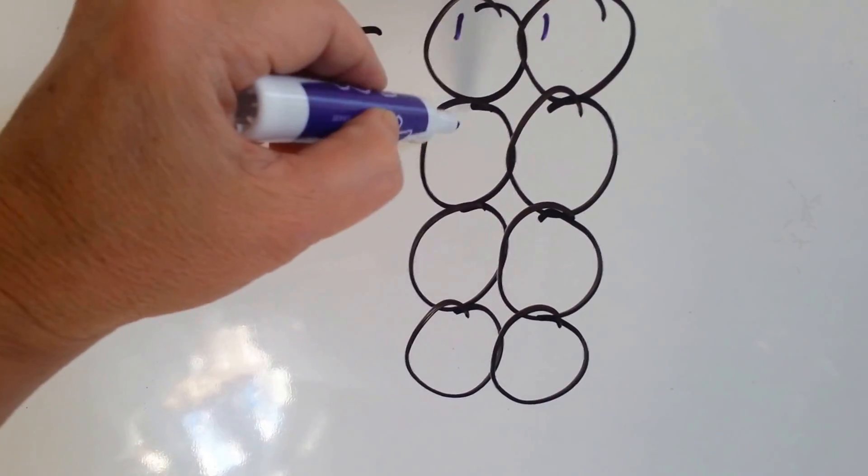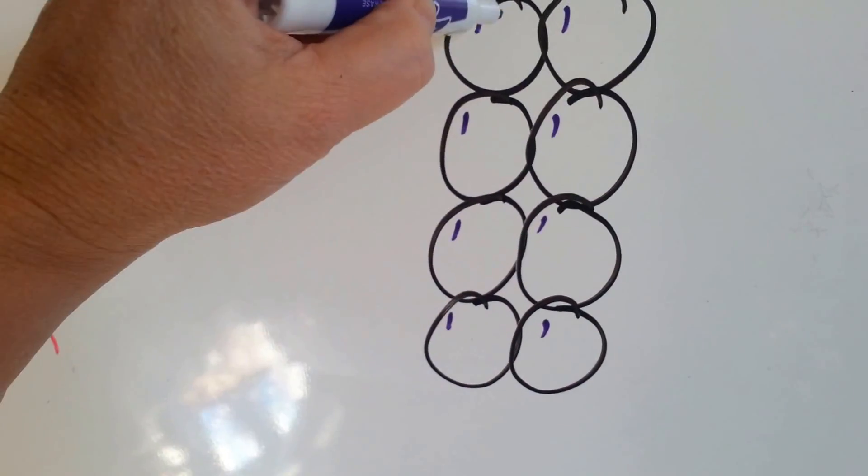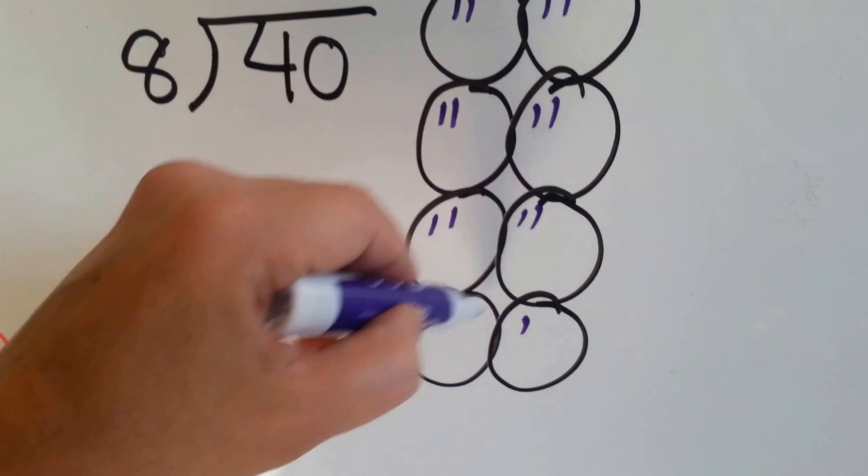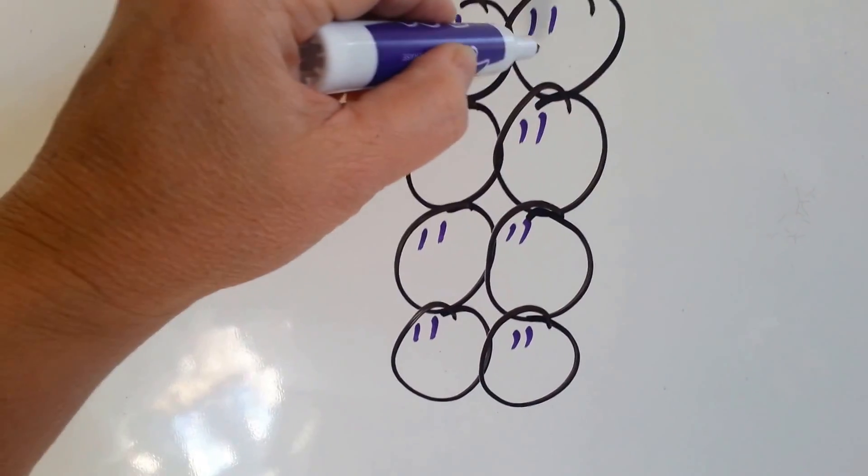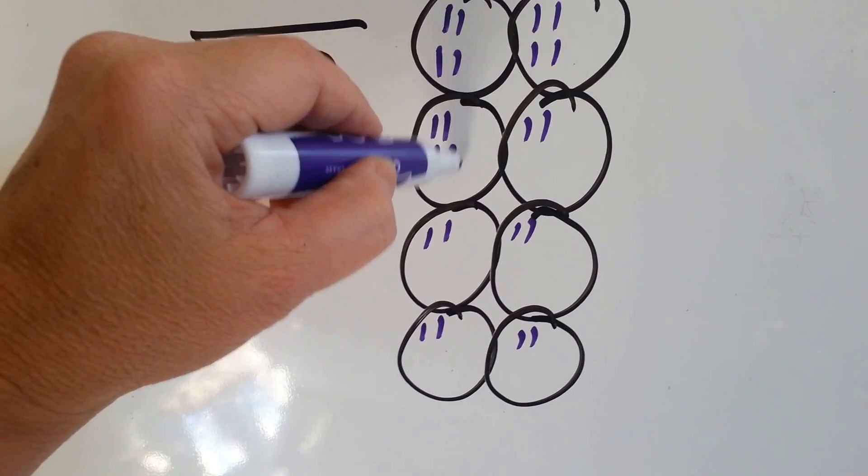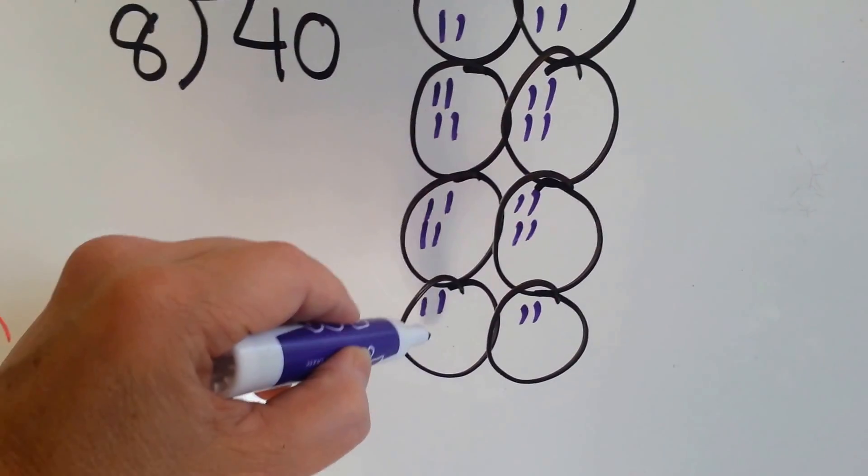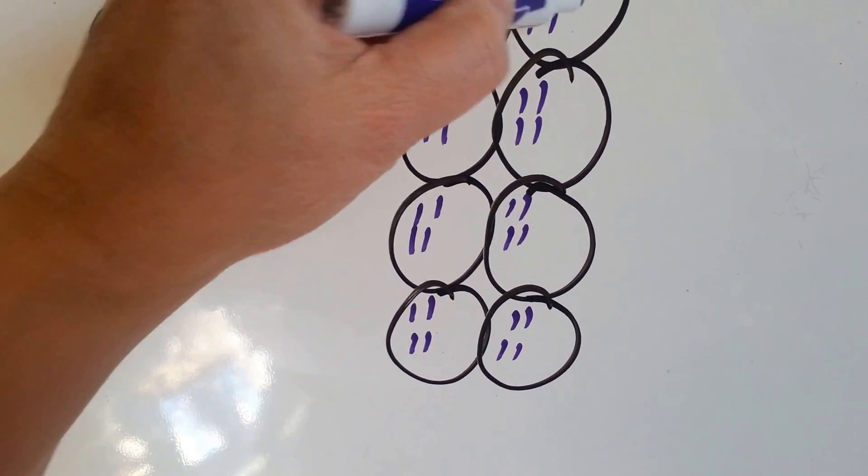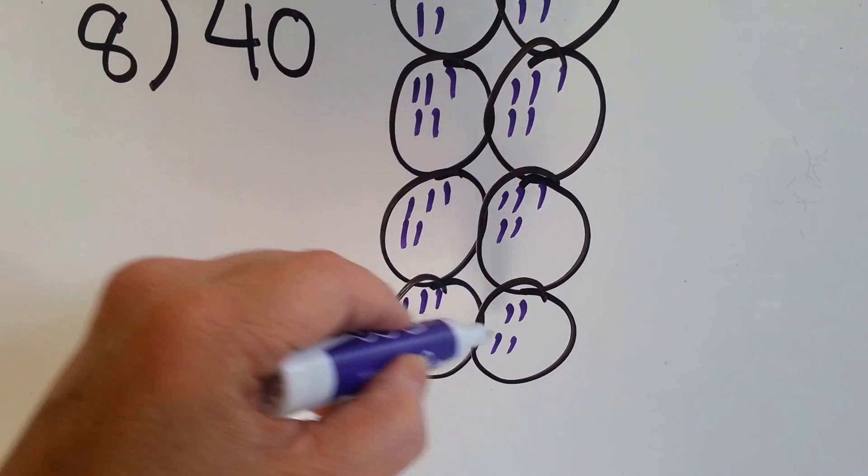Ready? 1, 2, 3, 4, 5, 6, 7, 8, 9, 10, 11, 12, 13, 14, 15, 16, 17, 18, 19, 20, 21, 22, 23, 24, 25, 26, 27, 28, 29, 30, 31, 32, 33, 34, 35, 36, 37, 38, 39, 40.